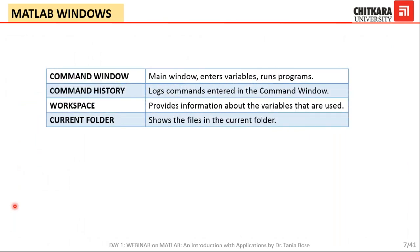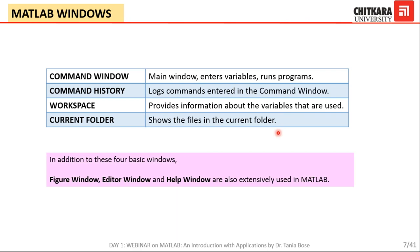To summarize: the command window is the main window which enters variables and runs programs. Command history logs the commands entered in the command window. Workspace provides information about the variables used. And current folder shows the files in the current folder. In addition to these four basic windows, you can also see a figure window, editor window, and help window, which I will explain in later slides.